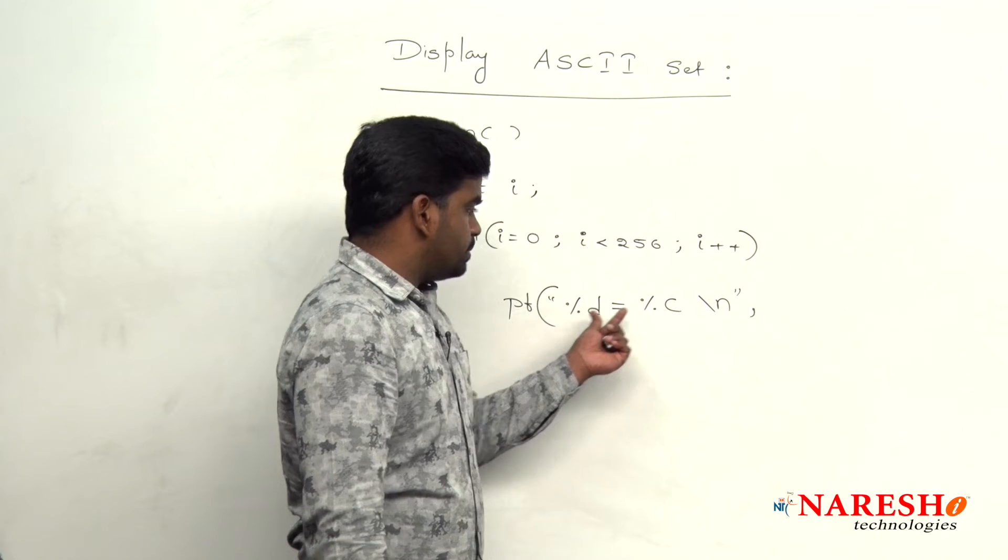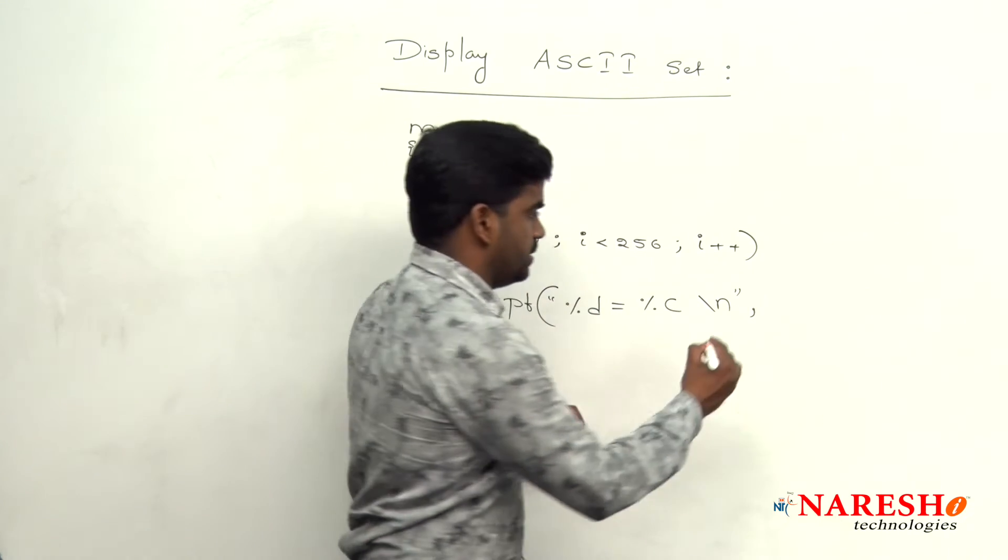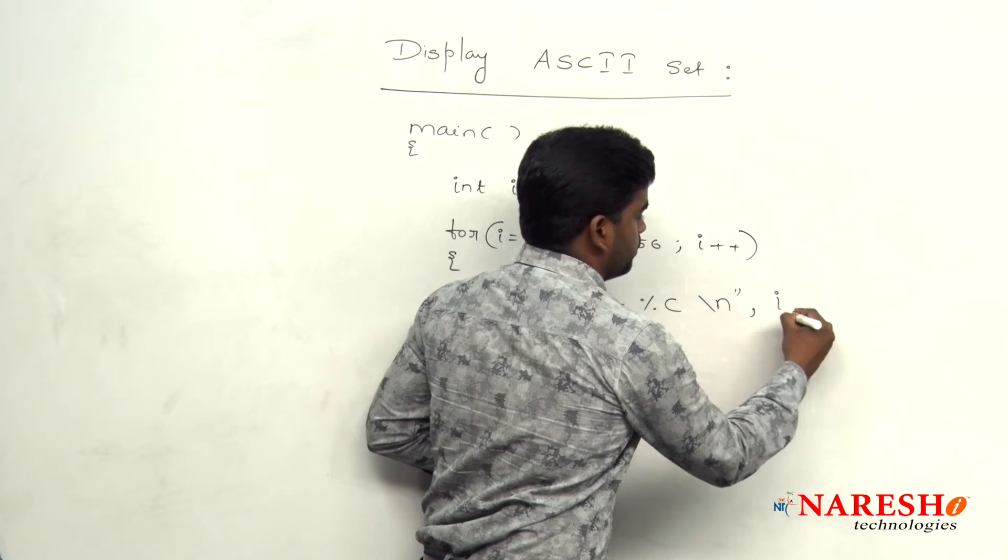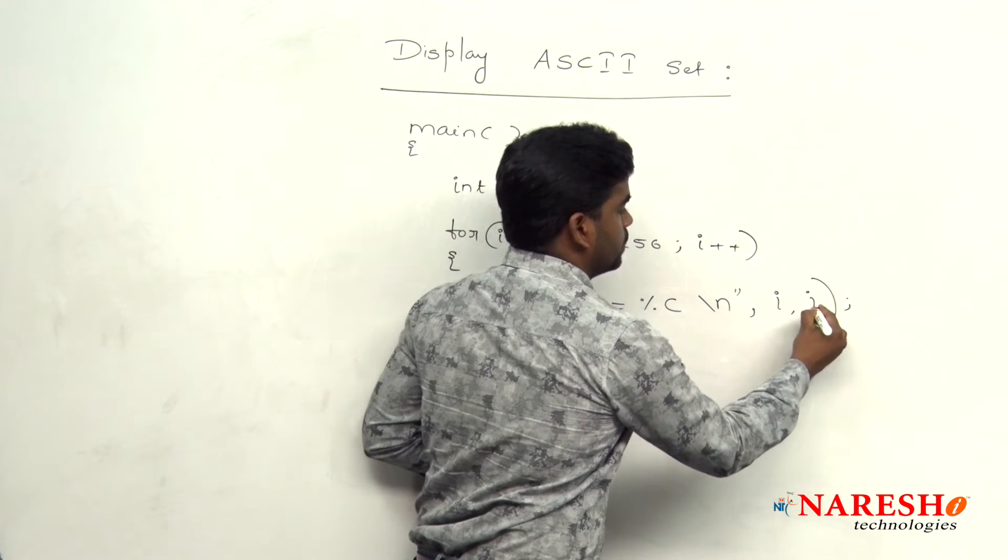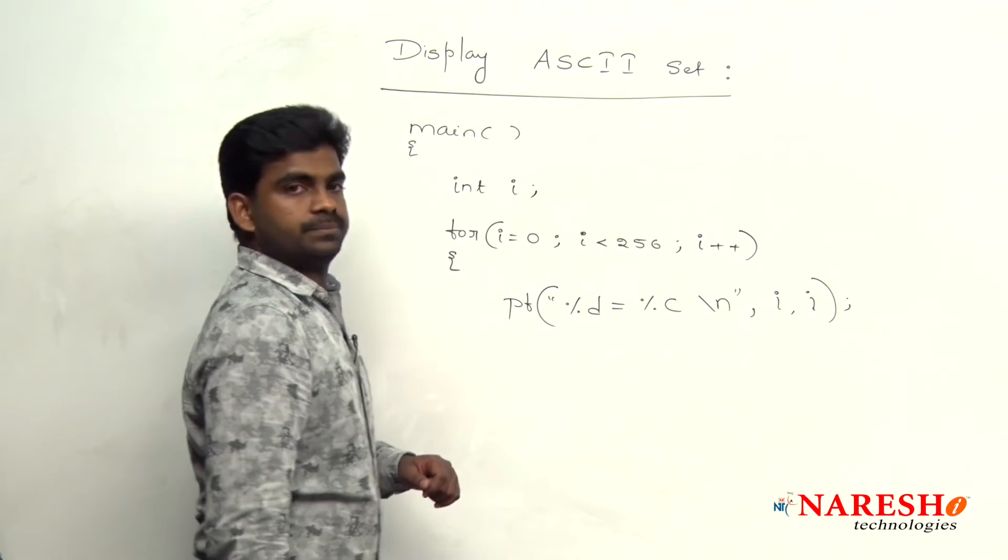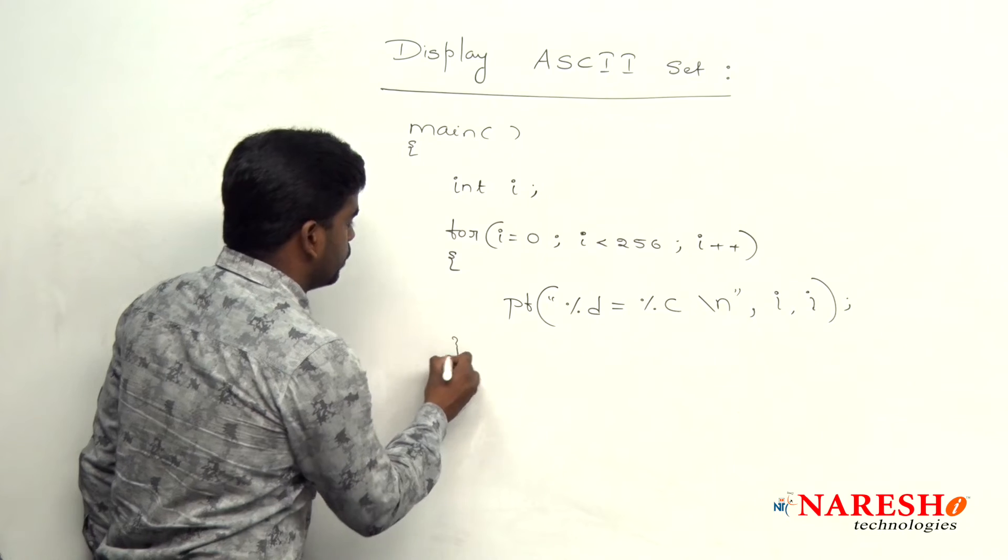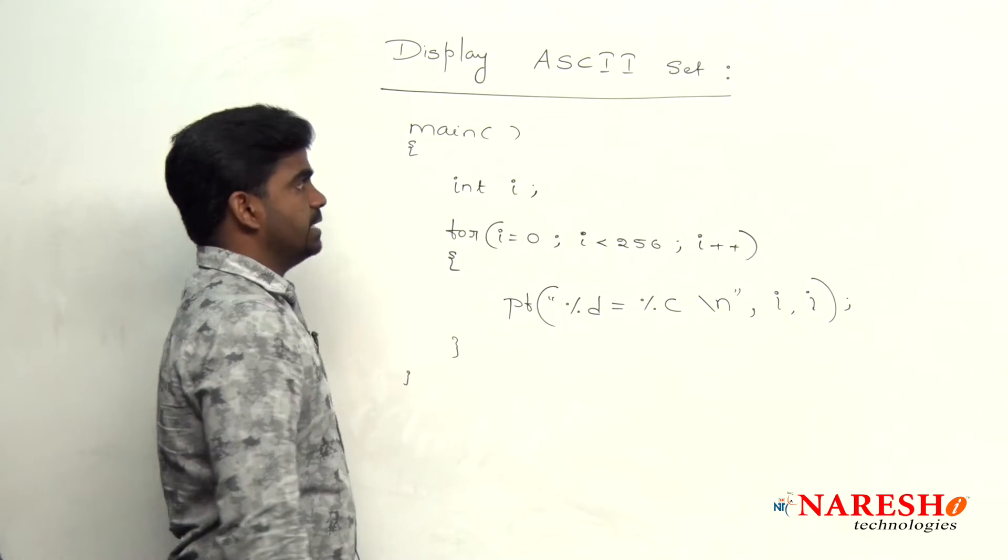In the first place and second place what are the values we need to display? In both the places i value only, i value only we need to display. A simple code will display that ASCII character set.